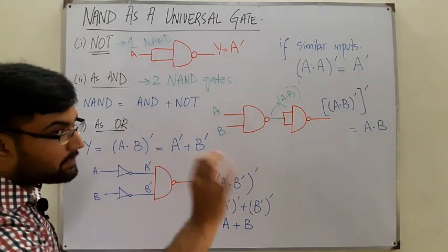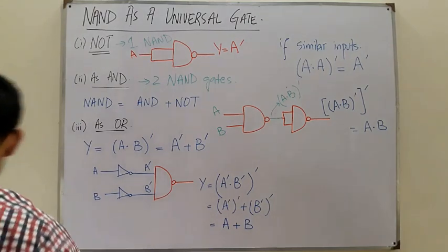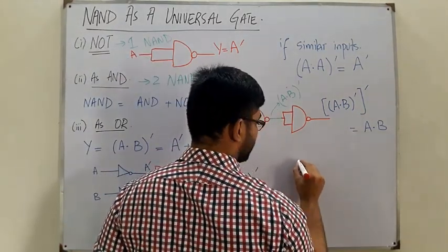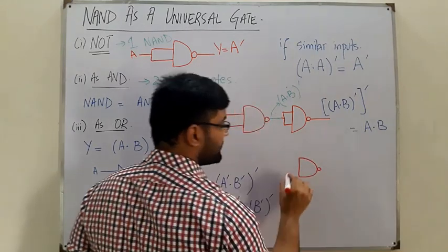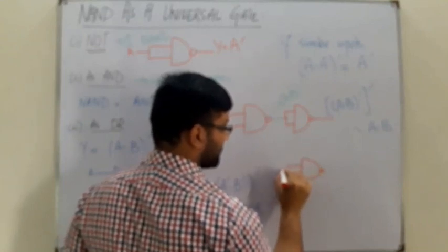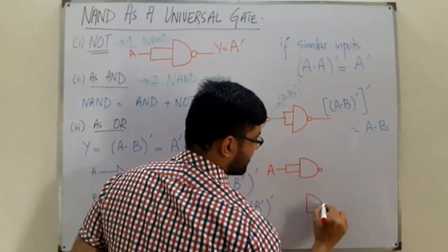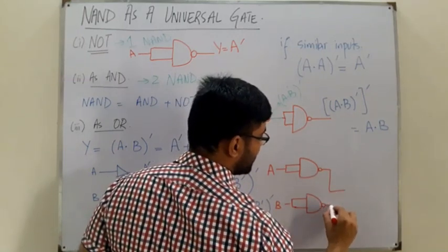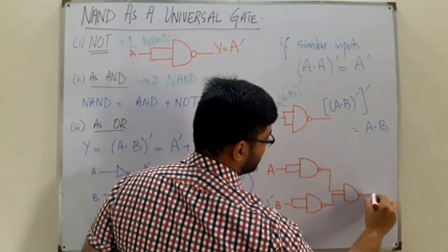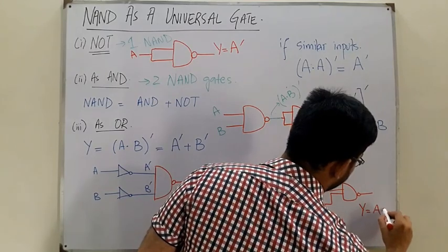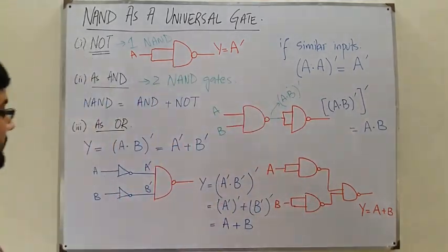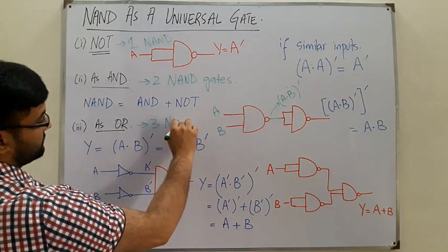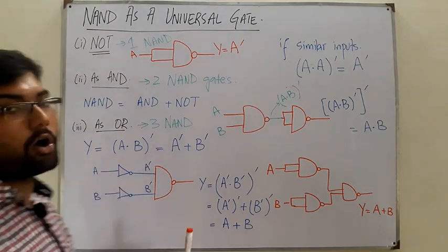To implement the OR operation using NAND gates: the first NAND gate has both inputs tied to A (acting as NOT), the second NAND gate has both inputs tied to B (acting as NOT), and their outputs are fed into a third NAND gate to get A OR B. So for the OR operator, we need three NAND gates to get the operation of one OR gate.